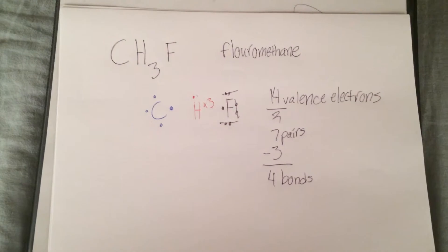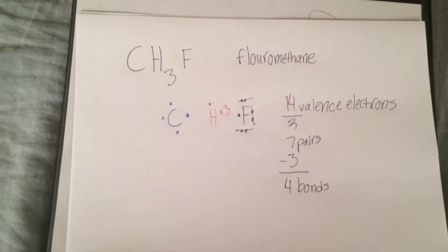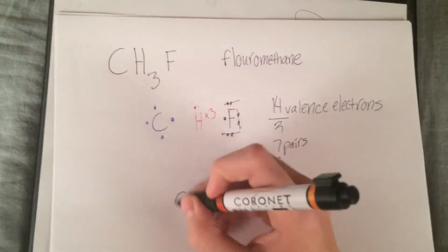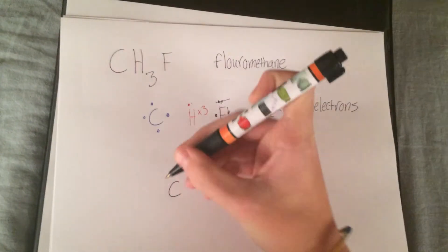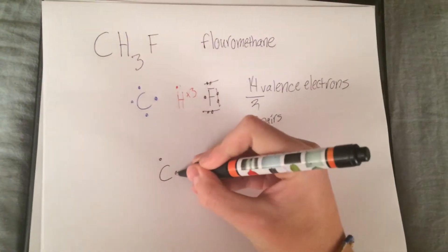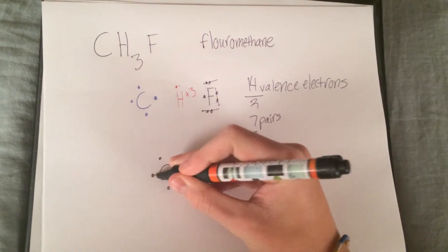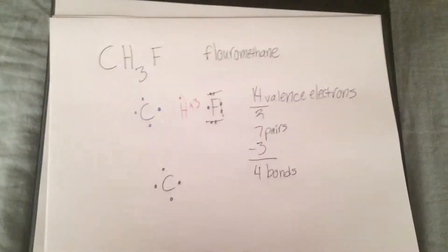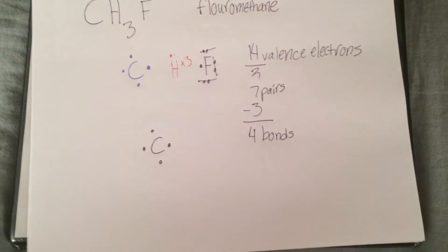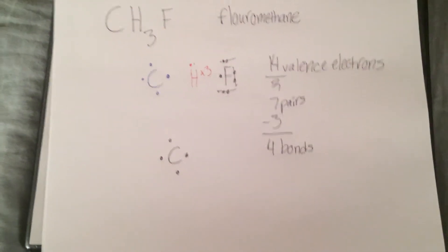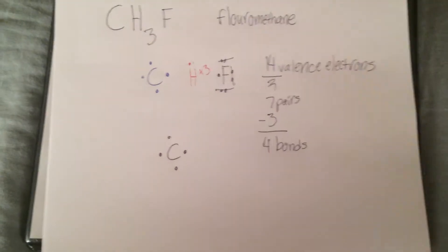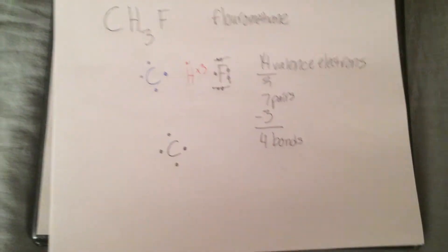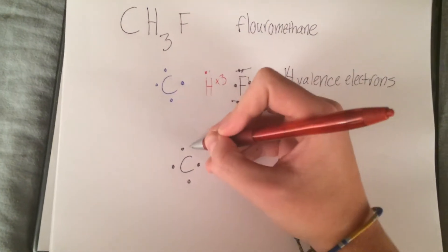Now, to start making this Lewis dot structure, you have set carbon in the middle because it has the most open spots. You then have to put in your three hydrogen and your fluorine. See that carbon has one open spot on each side. The hydrogen can fill up three of these spots.